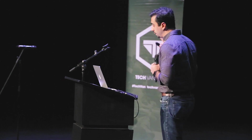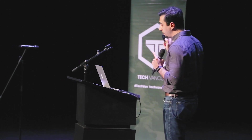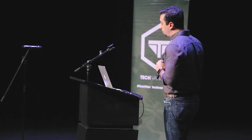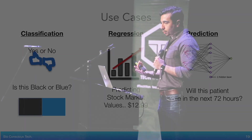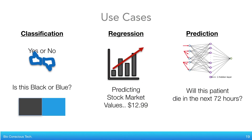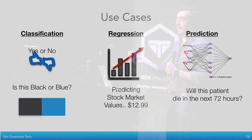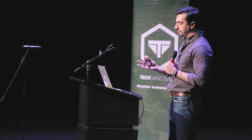What we focus on right now is essentially a combination of the two, but more closer to unsupervised learning than supervised learning. So let's look at how we can use machine learning algorithms in essence. You can use machine learning algorithms to classify things — yes or no, is this black or blue, is this a cat or a dog? — very general basic classification problems.